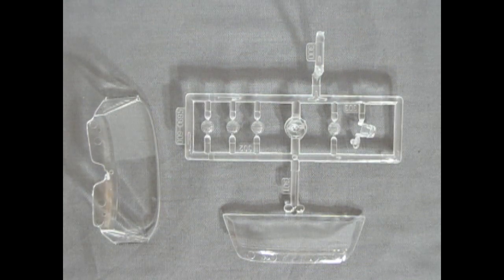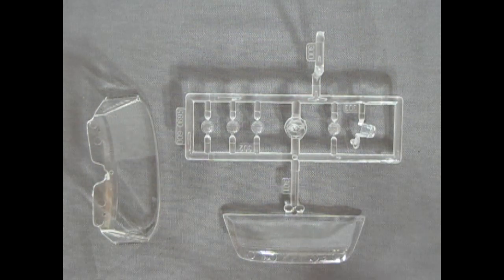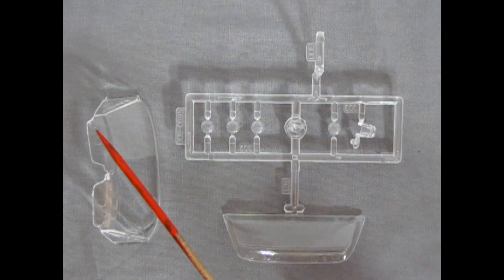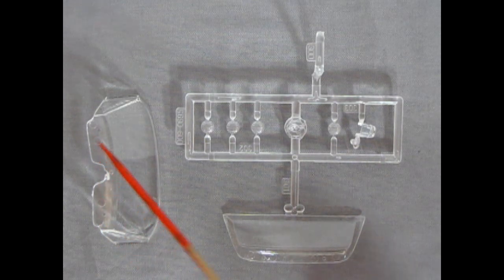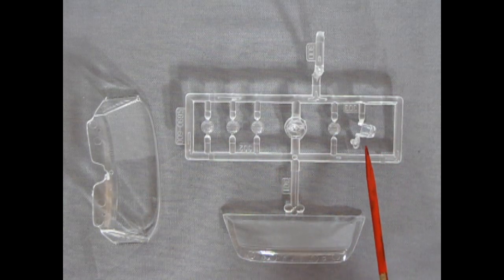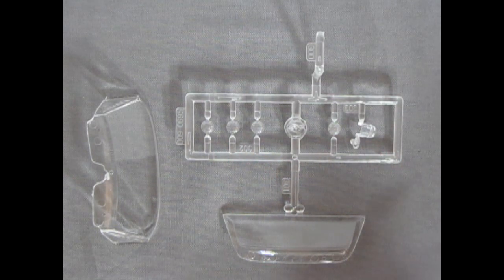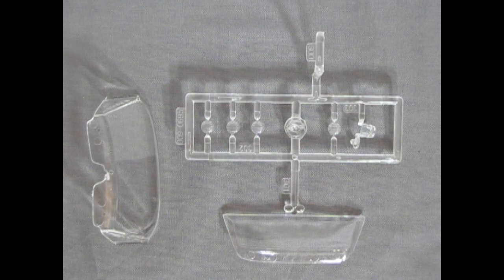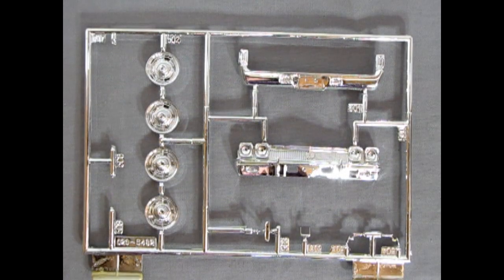Next up. We got the glass components. There's not too much on here. There is a front windshield. And it does look like they tried to mold in some little sun visors up here. The rear window. Four headlights. And the windshield washer bottle. So again. Very nice detail on these parts.